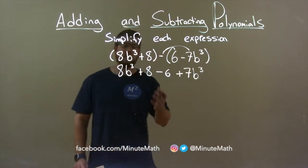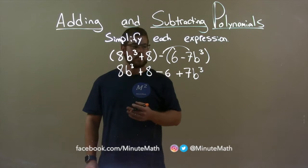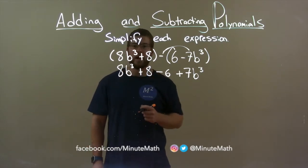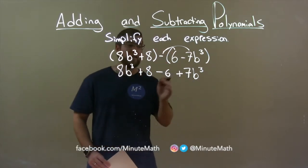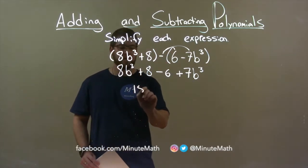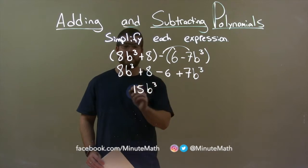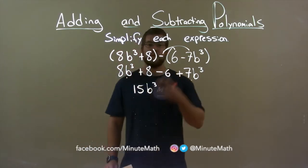Now, we just have to combine our like terms. Our highest degree comes first, and that's b to the third power. We have 8b to the third power plus 7b to the third power. That comes out to be 15b to the third power. Put dots underneath to show that we brought them down.